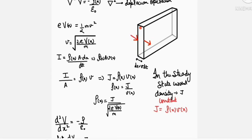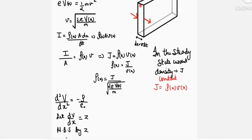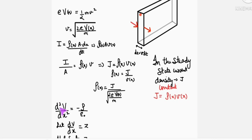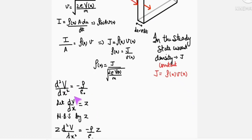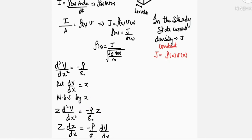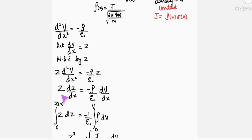Now we can say that del square V, we can write as D2V by DX2 in Cartesian coordinates, equals minus rho by epsilon naught. Let DV by DX equal Z. We will solve this differential equation. DV by DX equals Z. Multiplying both sides by Z, we get Z DZ by DX equals minus rho by epsilon naught DV by DX.